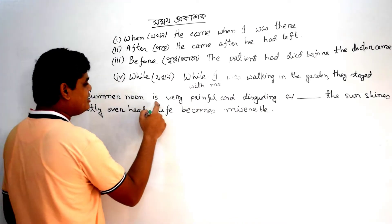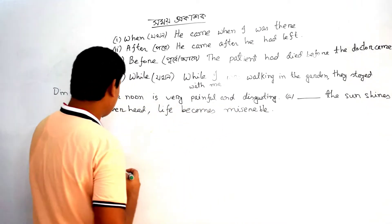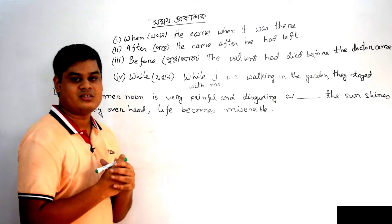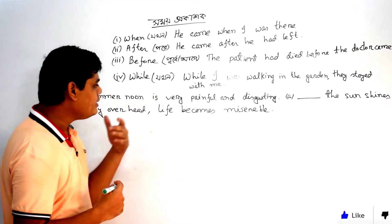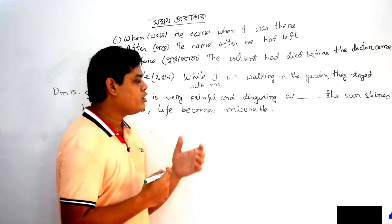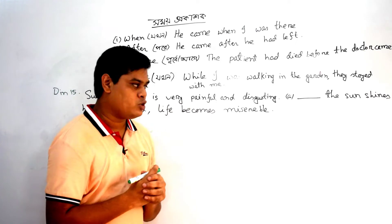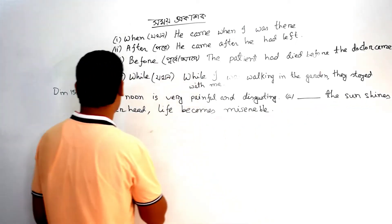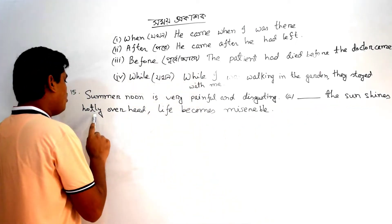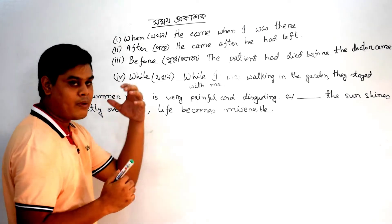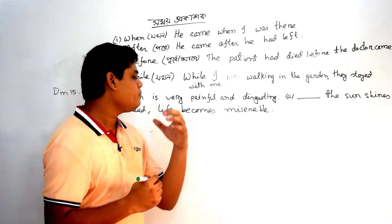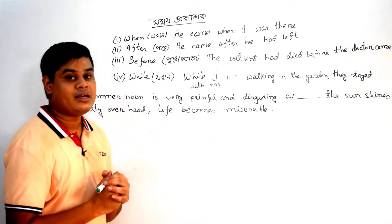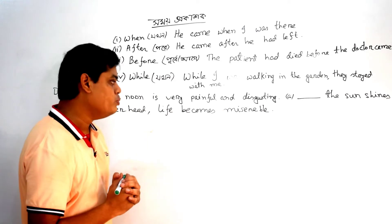Summer noon is very painful and disgusting. This is very difficult. The sun is hotly overhead. Life becomes miserable. Life is very difficult.